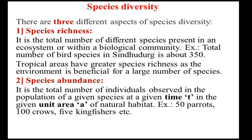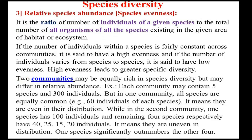The second aspect is species abundance. Species abundance is the total number of individuals observed in a population of a given species at a given time and in a given unit area of natural habitat. For example, 50 parrots, 100 crows, 5 kingfishers and likewise. The third aspect is relative species abundance, that is species evenness. It is the ratio of the number of individuals of a given species to the total number of all organisms of all species existing in a given area. If the number of individuals within a species is fairly constant across communities, it is said to have high evenness; if it varies from species to species, it is said to have low evenness.